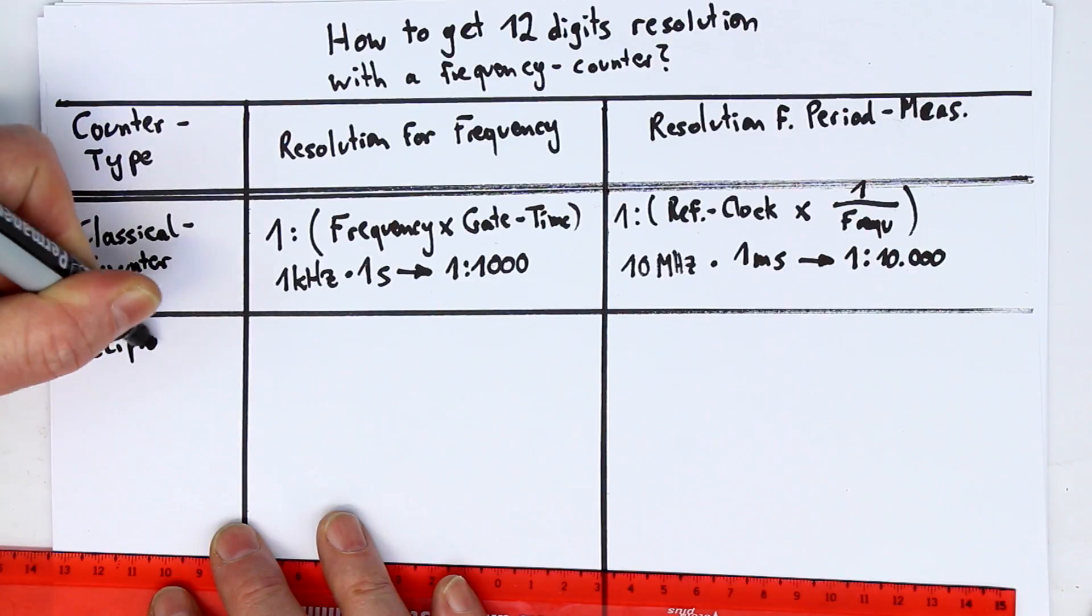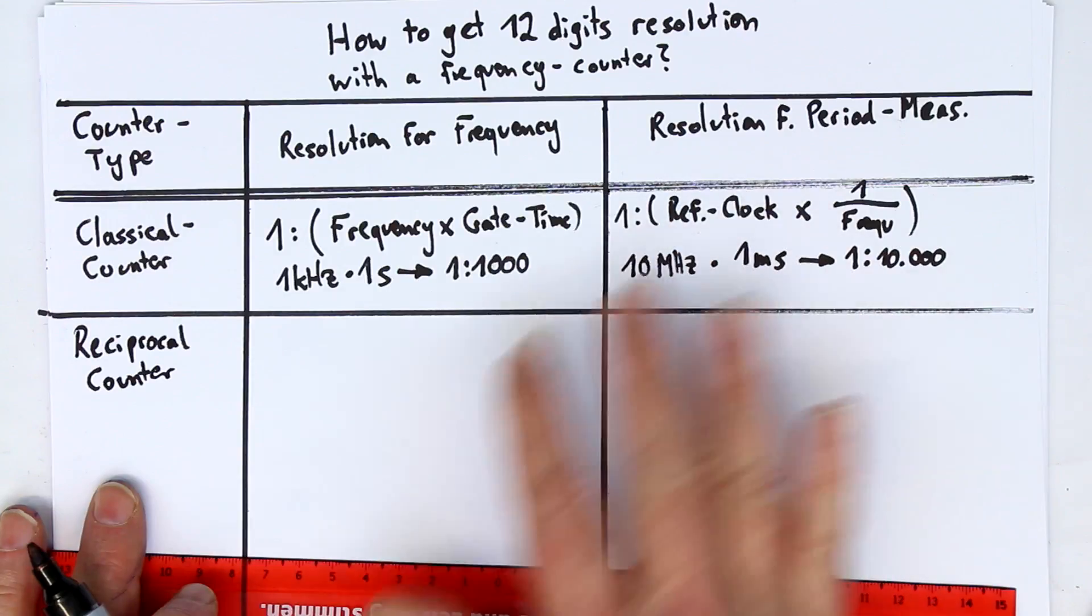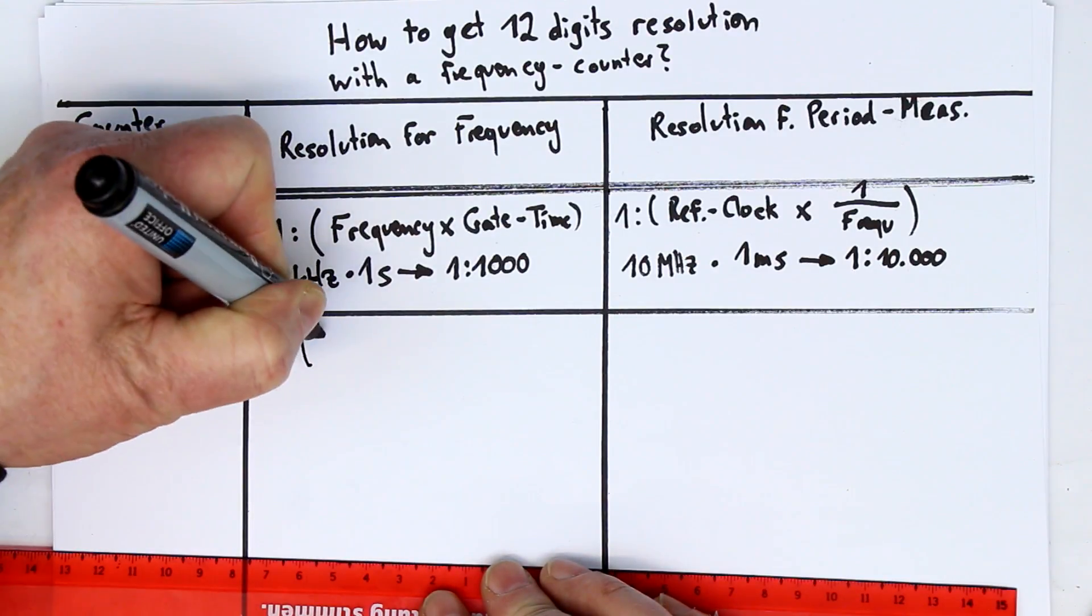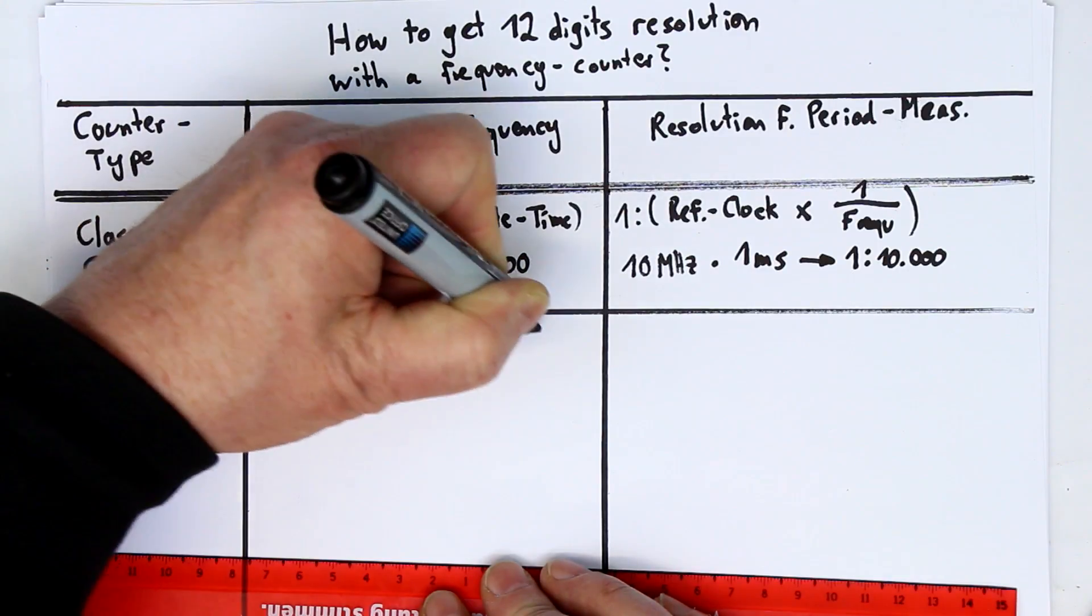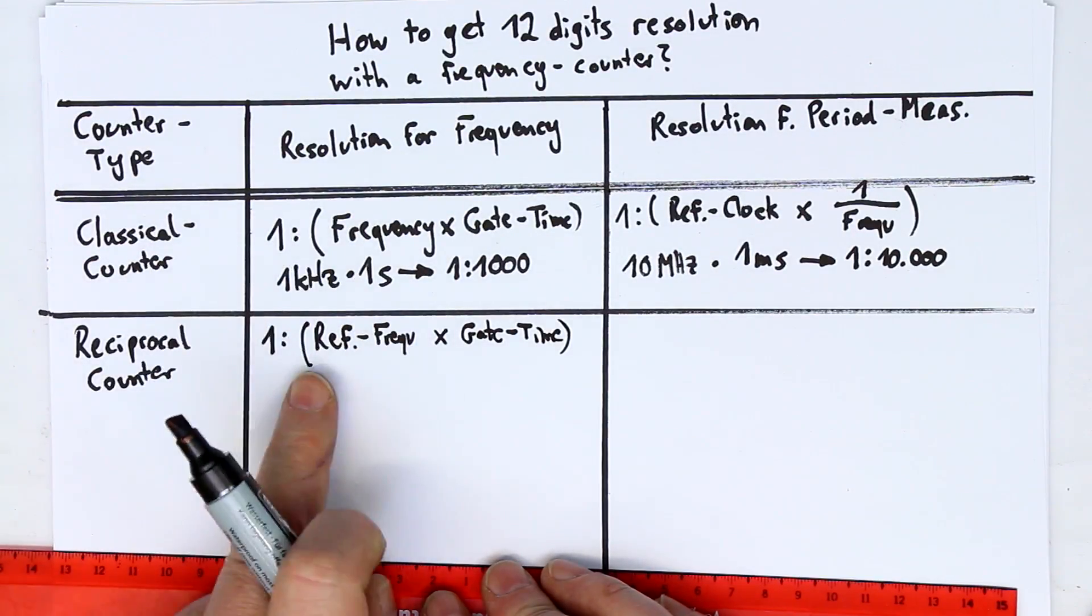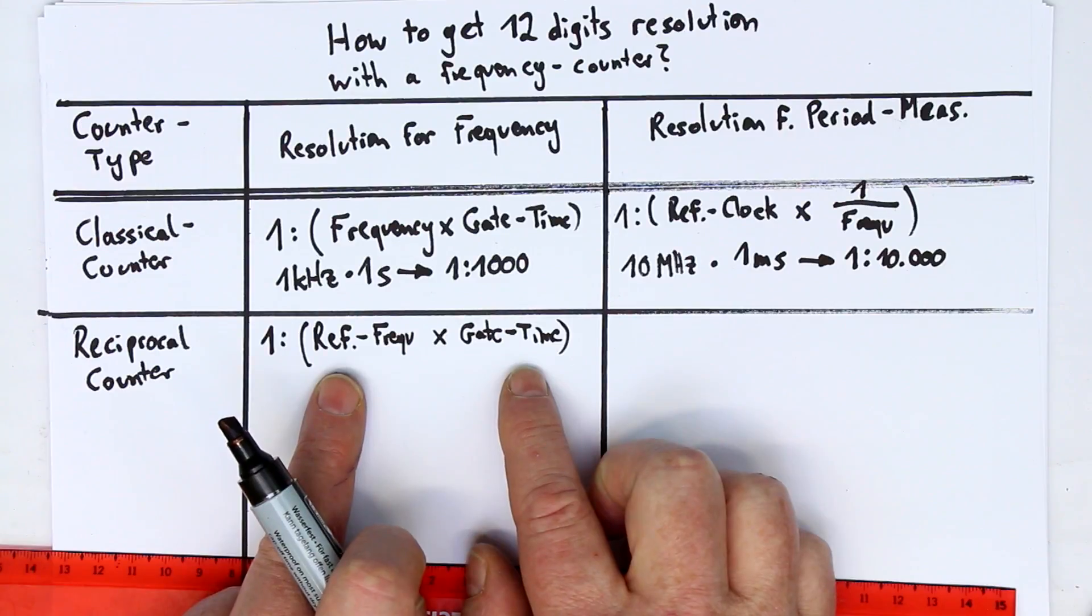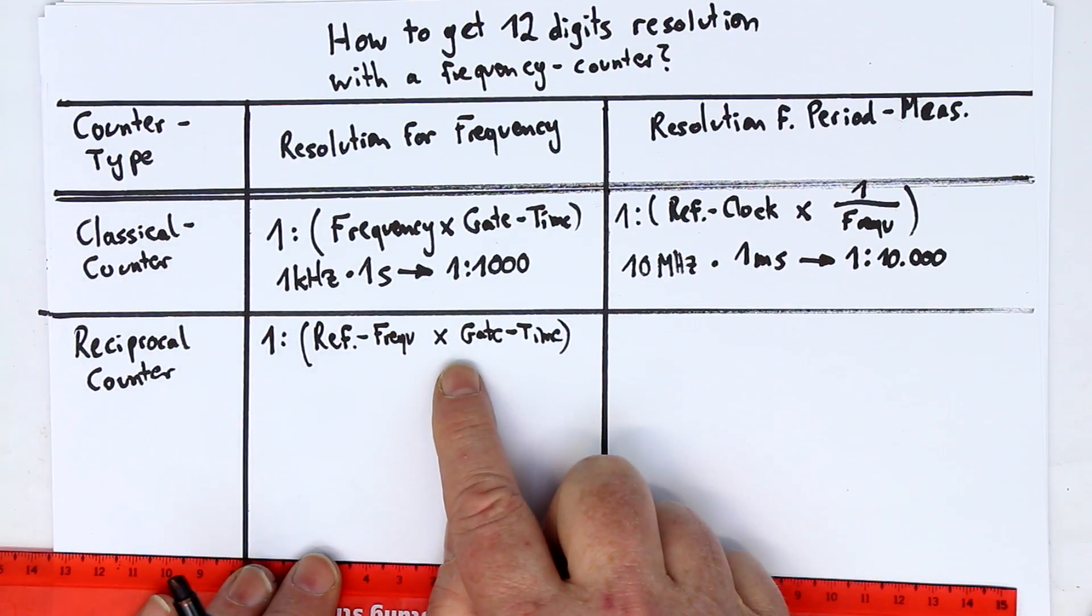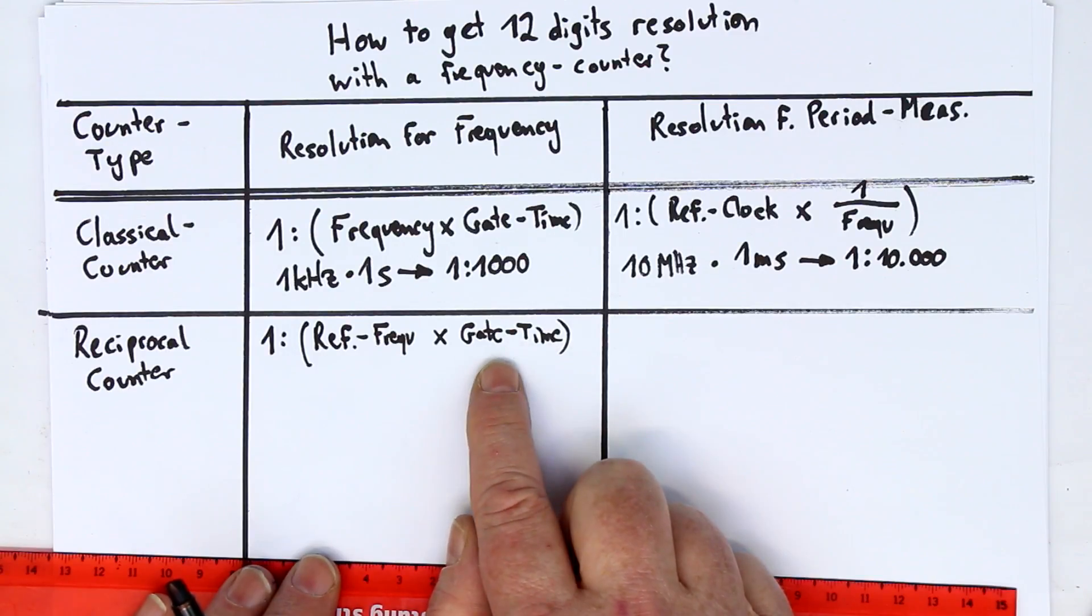And I've explained how it works in the last video, and let's compare now the resolution for frequency or period measurement to the classical counter. Now, the resolution is 1 divided by (reference frequency times gate time). And so, the measurement frequency doesn't appear anymore. So, you have an independent resolution, only determined by your usually fixed reference frequency and your gate time, which can be 1 second, 0.1 second, or if you're satisfied with less significant digits, you can also shorten this to 1 millisecond. Of course, the gate time is a minimum always of the period time of your signal, because you have to measure at least one period.